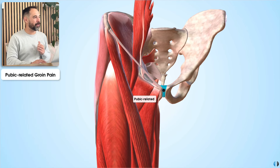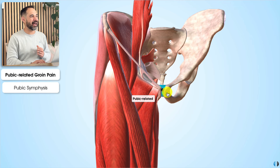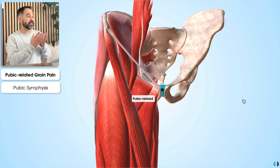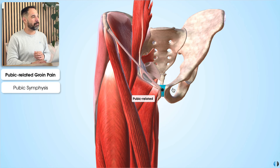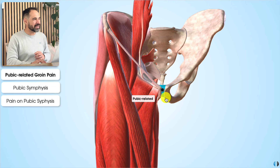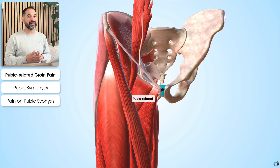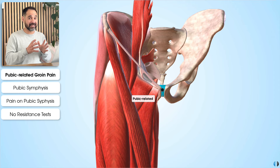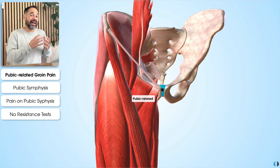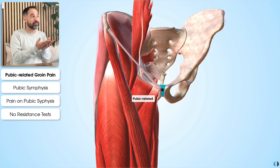Next we have pubic-related groin pain — pain and dysfunction of the pubic symphysis itself. The group agreed that key characteristics include pain on palpation of the pubic symphysis and/or the bone immediately adjacent to it at the very medial end of the pubis. The experts agreed that there was no particular resisted test that would provoke a specific pubic-related groin pain, so ideally it is palpation of this region that would really highlight this diagnosis.